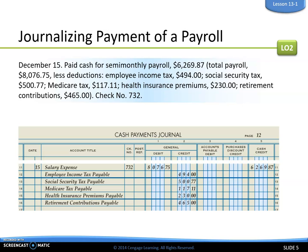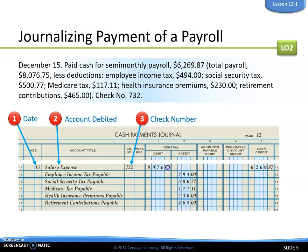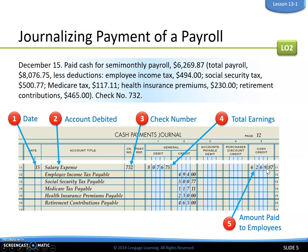We already looked at those T-accounts in the previous slide; now we are putting it into our journal. Since we are paying cash and writing a check, we go to our Cash Payments Journal. We start with the date, debit Salary Expense, enter the check number, and record the debit to salary expense — remember, this number is our total earnings. Then we credit Cash for our net pay.